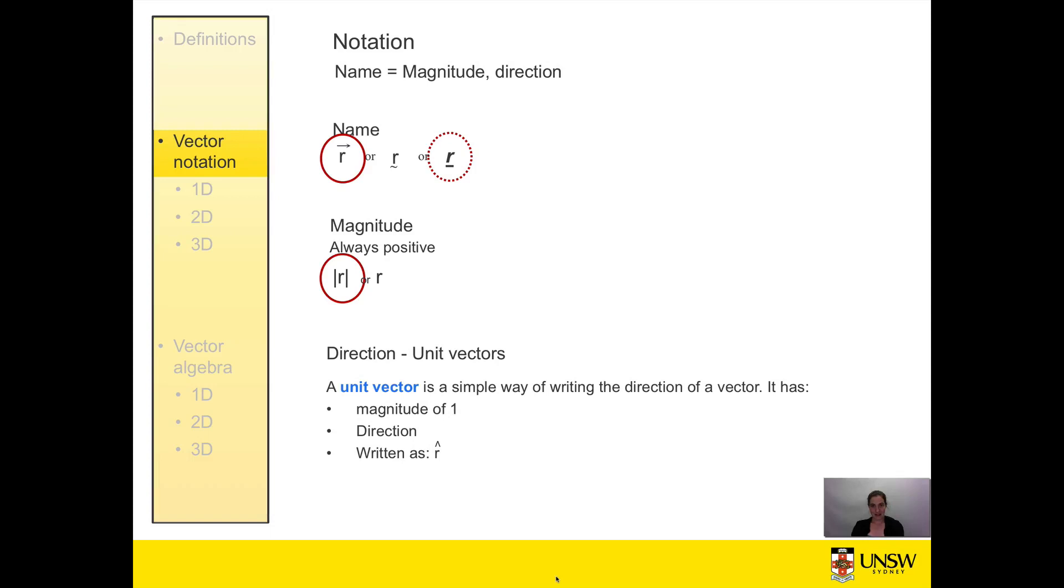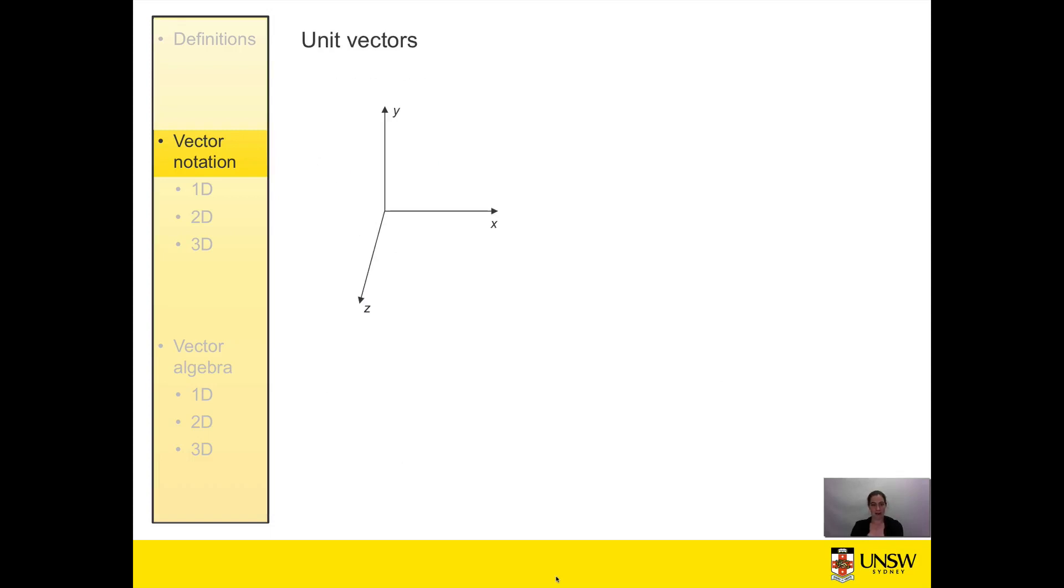We have three standard unit vectors, one for each dimension in three dimensional space. Here we have our standard Cartesian coordinate system with the three axes: horizontal axis, vertical, and depth. And our unit vectors we use to describe them.